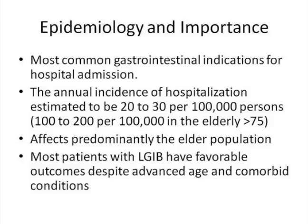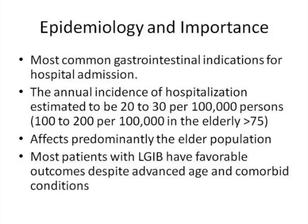The epidemiology is also very important. Every time you're called to see somebody with lower GI bleed, you're going to see an elderly patient. It's the most common gastrointestinal indication for hospital admission. The annual incidence of hospitalization is estimated to be 20 to 30 per 100,000 persons, and about 100 to 200 per 100,000 in the elderly population—those individuals with age greater than 75. In most patients with lower GI bleed, they have favorable outcomes despite advanced age and morbid conditions. It's not as fatal as we think, but it requires tremendous work to find the source and manage it.